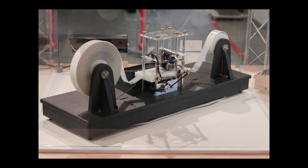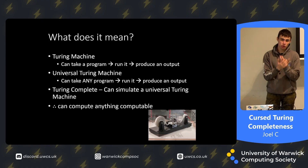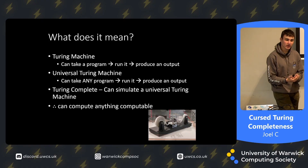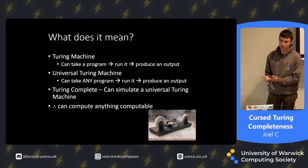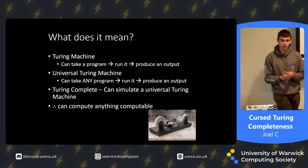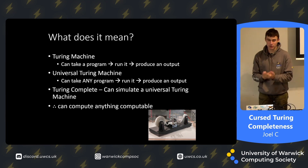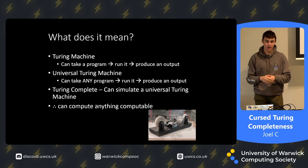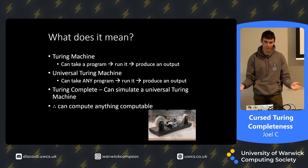Often they're represented like this: a tape which represents the instructions, and then a black box that goes into it to record and edit the instructions. We say something is Turing complete if it can simulate a universal Turing machine, which can therefore simulate any Turing machine you throw at it — meaning it can compute anything that is computable. It is an all-powerful computer.